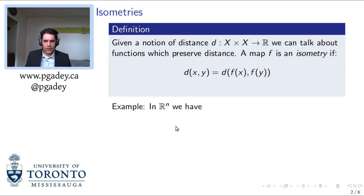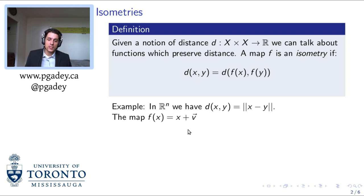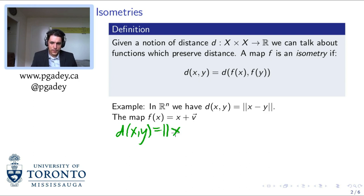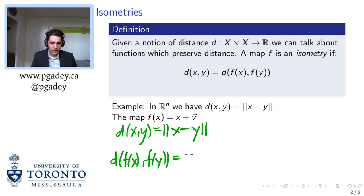Let's have an example. In R^n, we have the following notion of distance. To calculate the distance between two points x and y, we subtract them to get a vector and then take the length of that vector. The map that sends a point to a point plus a vector is going to shift everything uniformly by that vector v, and this is going to preserve distances. We're going to say that the distance between x and y is the length of x minus y. And the distance between f of x and f of y is going to be the length of x plus v minus y plus v.